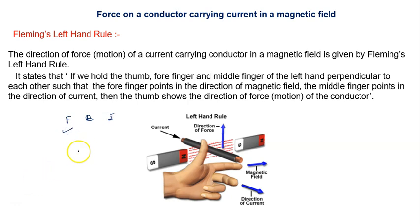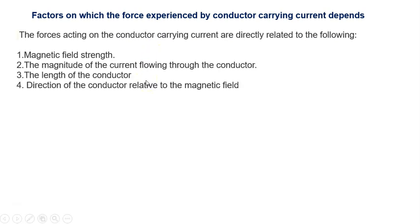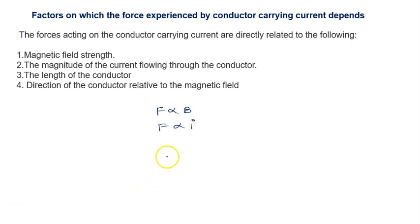The force experienced by a current-carrying conductor depends on the following factors: first, the magnetic field strength — more the magnetic field, more the force, so F is proportional to B; second, the magnitude of current — more the current, more the force, so F is proportional to I; third, the length of the conductor — more the length, more the force, so F is proportional to L. The fourth factor is the direction of the conductor relative to the magnetic field, which will be discussed in senior classes.